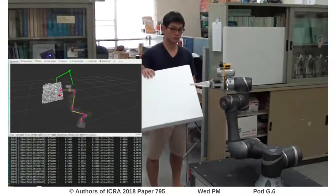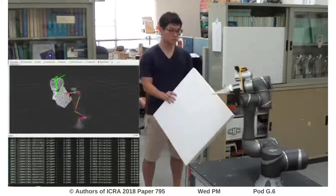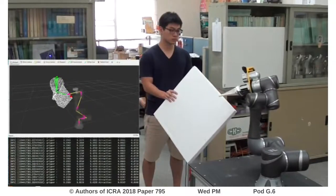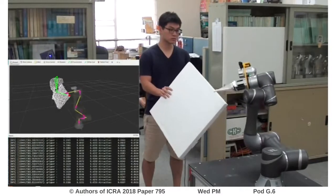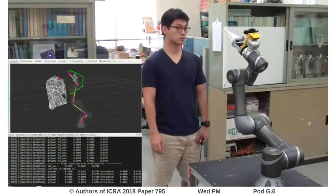We use the 6 degrees of freedom Techman TM5 robot in the experiment. It is executing a given hexagon trajectory in task space, while the human enters the robot workspace and tries to touch the end effector with an object or bare hands.